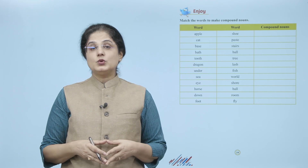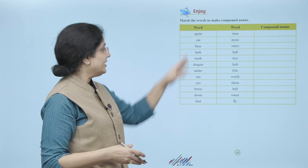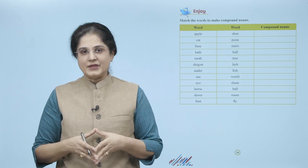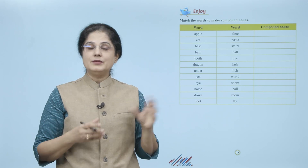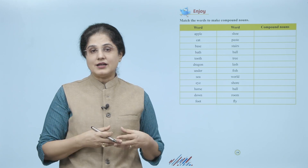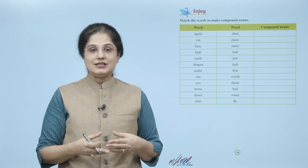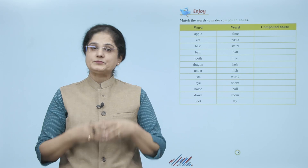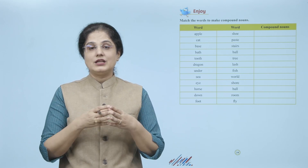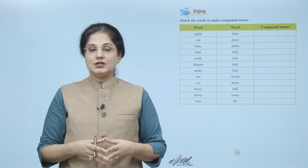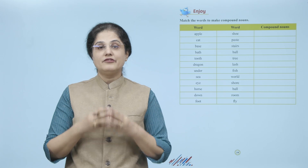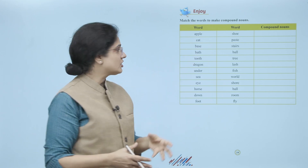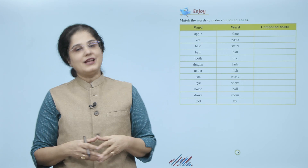Let us enjoy. Match the words to make compound nouns. Aapko yeh words diye gaye hain — inko match karein aur compound noun banaayein. Pehle column mein diya gaya hai: apple, cat, base, path, tooth, dragon, under, sea, eye, horse, down, foot. Aur doosre column mein kya words diye gaye hain: shoe, paste, stairs, ball, tree, lash, fish, world, shore, ball, room, fly. To aap yahan dekhenge ki kaunsa word aap kis word ke saath match karke ek compound noun bana sakte hain.